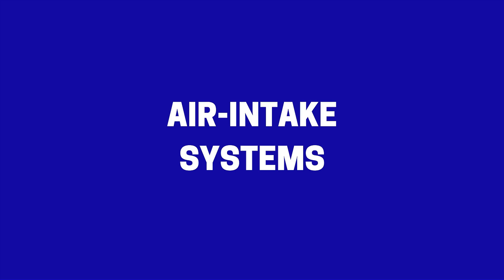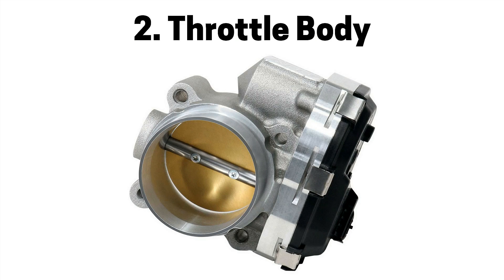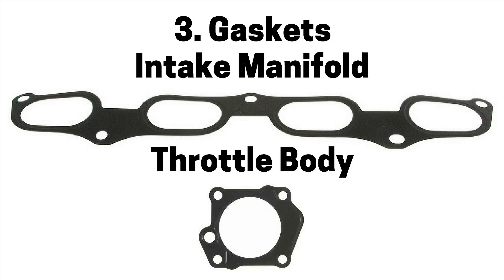First pertains to air intake systems. Number one is a dirty air filter causing air intake restriction, which can cause a rich air fuel mixture, engine misfire, and a check engine light. Number two is a faulty throttle body due to accumulation of carbon, road grime, and other materials interfering with opening and closing the throttle plate, causing a rich or lean air fuel mixture, engine misfire, and a check engine light. Number three is a faulty gasket on the intake manifold or throttle body, which can cause a lean air fuel mixture, engine misfire, and a check engine light.